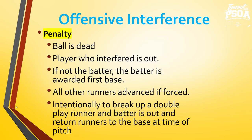The penalty: ball is dead, player who interfered will be out. If it's not the batter, it's the teammate — the batter is out. If it's not the batter who's out, that batter, if it's a fair ball, is awarded first base. All other runners advance if forced. And if it's intentional to break up a double play — so the runner kicks the ball to prevent a 6-4-3 double play — that can be judged intentional offensive interference, and runner and batter would both be out.